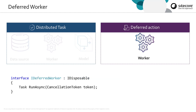Contrasting that with the deferred worker — the deferred worker is much simpler. It doesn't have a data source, so we don't expect any input parameters. We simply have a single method, runAsync, and we do whatever we need to do inside that method.